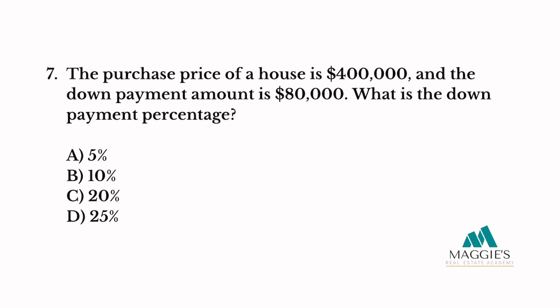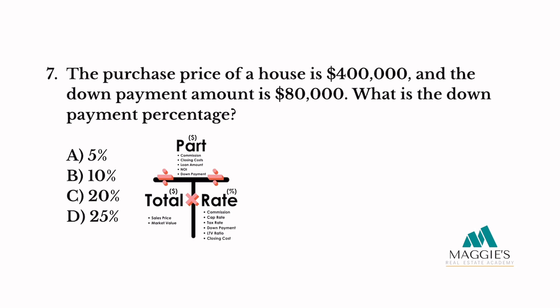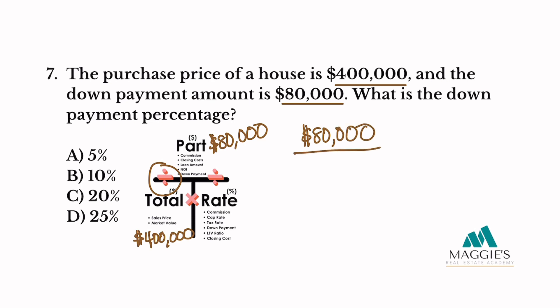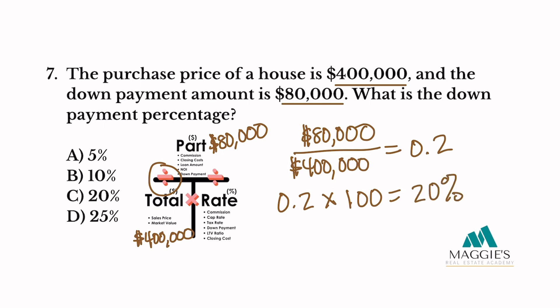Number seven. The purchase price of a house is $400,000 and the down payment amount is $80,000. What is the down payment percentage? The purchase price of $400,000 always goes in the total column, and the down payment amount of $80,000 goes on the top. Now we divide then multiply by 100: $80,000 divided by $400,000 equals 0.2. Now we multiply by 100 to convert it to a percent: 0.2 times 100 equals 20%. So the answer to this one is C.